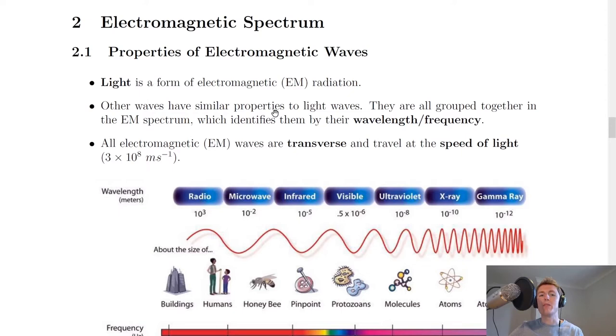We're going to start by looking at properties of electromagnetic waves. The first thing to note is that light is a form of electromagnetic radiation. Notice we use capital E, capital M to mean electromagnetic, just so we don't have to say that long word every time. But it's also the case that other waves have similar properties to light waves. And these are all grouped together in what we call the EM spectrum, the electromagnetic spectrum, which identifies them by their wavelength or frequency.